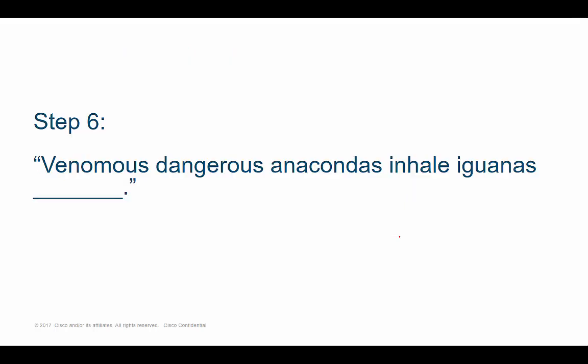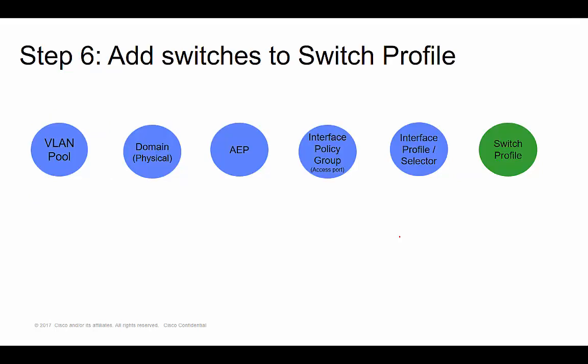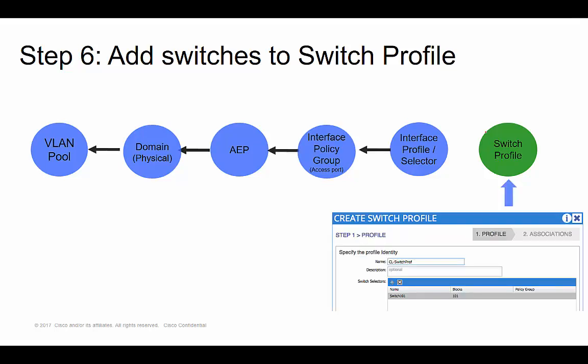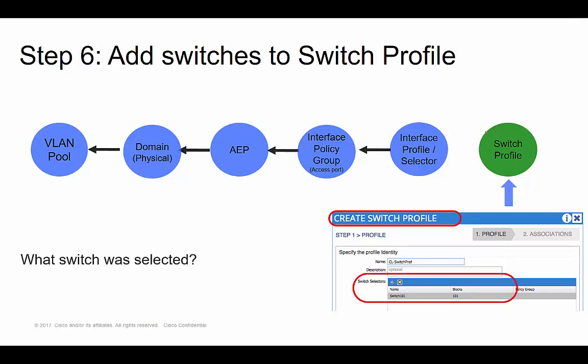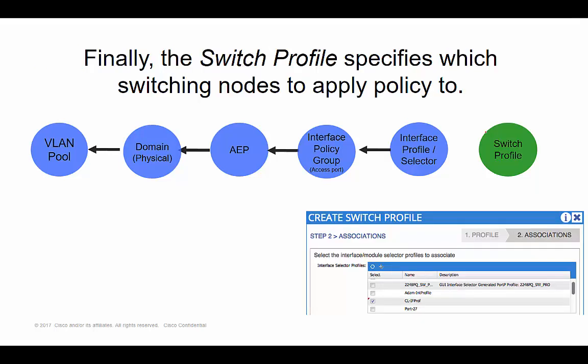That takes us to step six: venomous, dangerous, anacondas, inhale iguanas blank. The last word is 'swiftly,' which starts with an S, and that takes us to the last step — which is switch profile. In step five we selected an interface, but in step six we're going to select a switch to apply the config to. Notice here I'm creating my switch profile, then selecting switch 101, and we're always going to map this step back to the previous step — back to the interface selector profile.